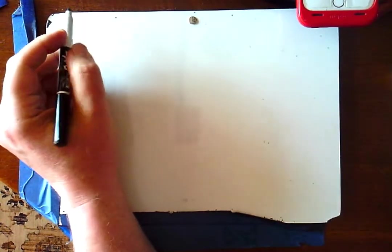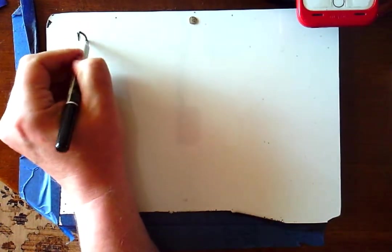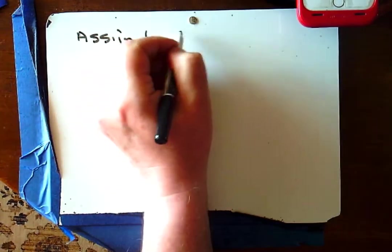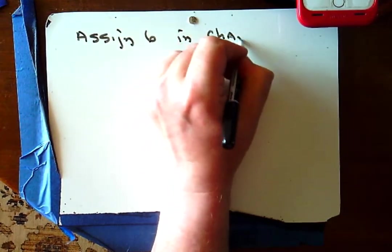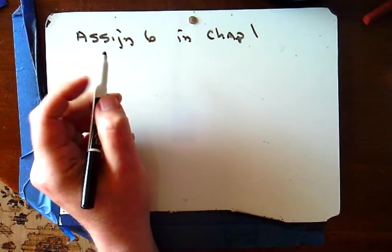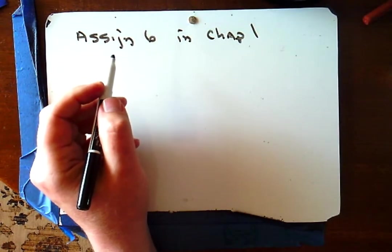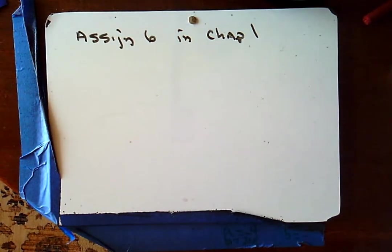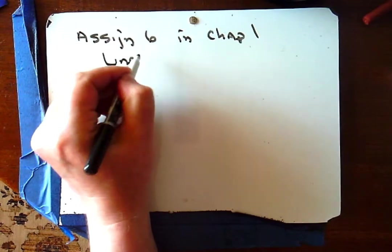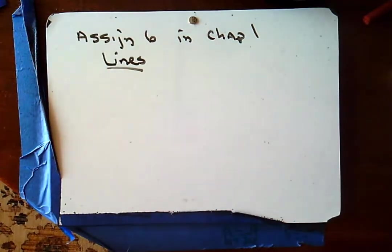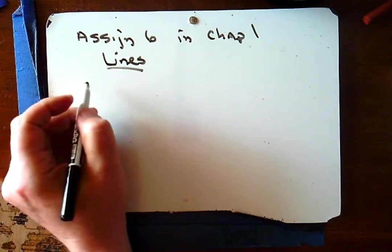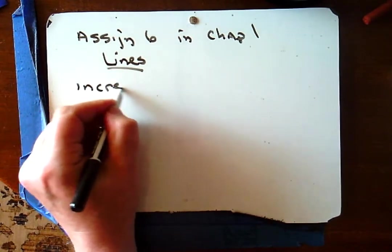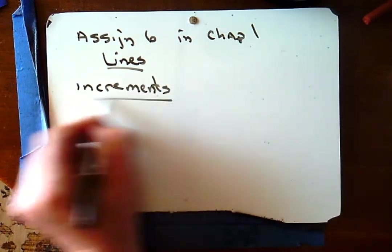Hey everyone, this is the video for assignment 6 in chapter 1. It deals with all kinds of basic stuff — most of which you'll probably know, some things you might have known and forgotten, and maybe some things you haven't learned at all. We're going to talk about a bunch of these things right now, and the focus is lines.